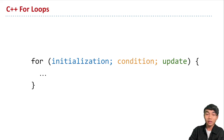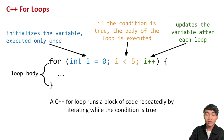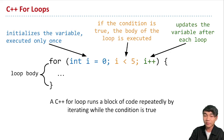A loop enables us to run a block of code repeatedly. In C++, we have the keyword for followed by parentheses, and it has three different parts that I've color coded here: the first being the initialization, the next being the condition, and the last being the update. In blue, we have the initialization where we initialize the variable we're going to use over the course of the loop, and this is executed only once. Here we're initializing a variable called i, which we'll use to help determine how many times we repeat the block of code.